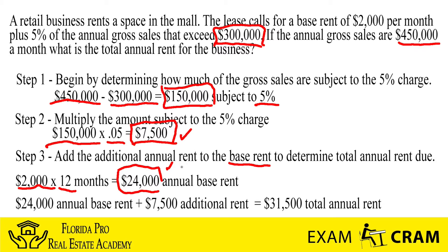You only have to pay 5% in this case on what's above the $300,000. So we take $2,000 by 12, which comes out to $24,000. Then we add on the additional rent of $7,500, and that gives us $31,500 — and that's going to be our annual total. Remember, they're looking for the annual. And that's all there is on this one.